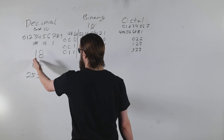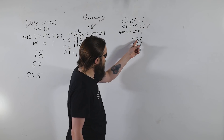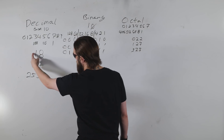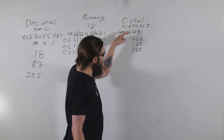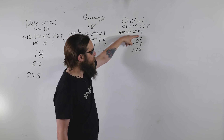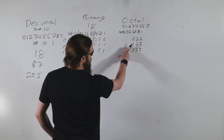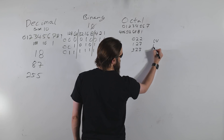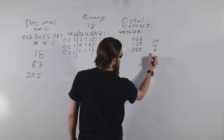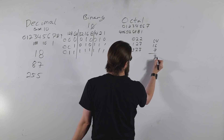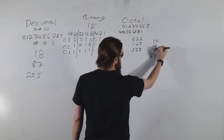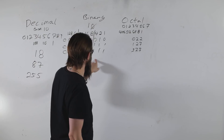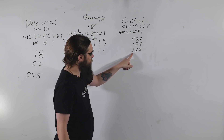We can also translate directly from decimal to octal using place values — same concept as decimal, but with eights instead of tens. For 18: two eights is 16, plus two ones is 18. For 87: 64 plus 8 times 2 (which is 16) plus 7 equals 87. For 255: 64 times 3 is 192.